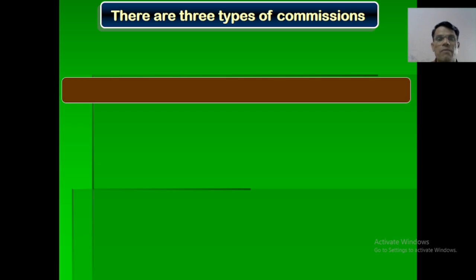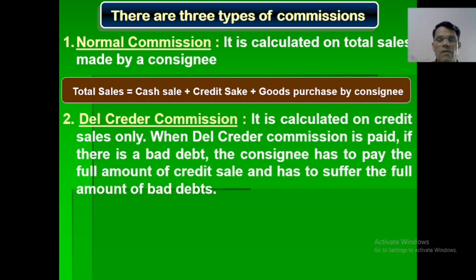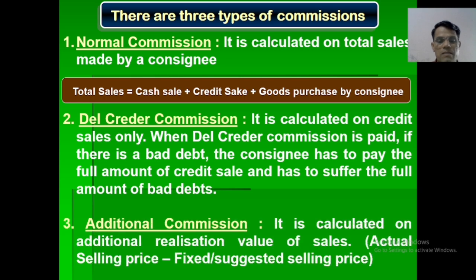There are three types of commission. Normal commission is calculated on total sales made by the consignee: total sales equals cash sales plus credit sales plus consignee's personal purchases. Del credere commission is calculated on credit sales only; when del credere commission is paid and there is a bad debt, the consignee has to pay the full amount of credit sales and bear the full amount of bad debts. Additional commission is calculated on the additional realised value of sales: actual selling price minus the fixed suggested selling price.